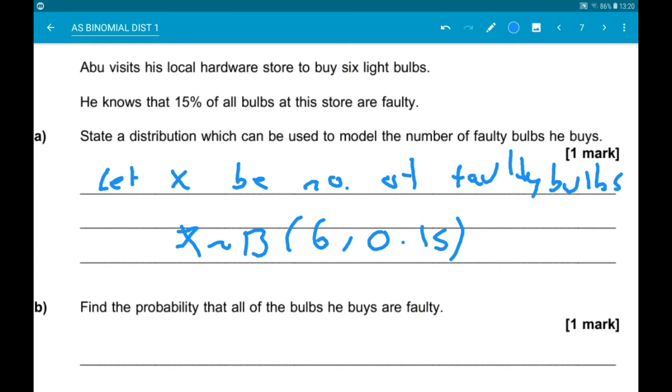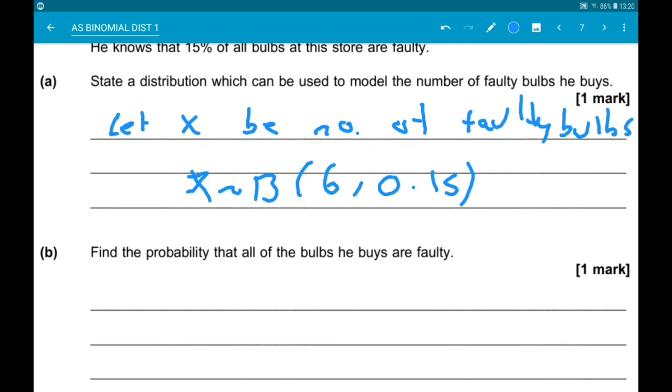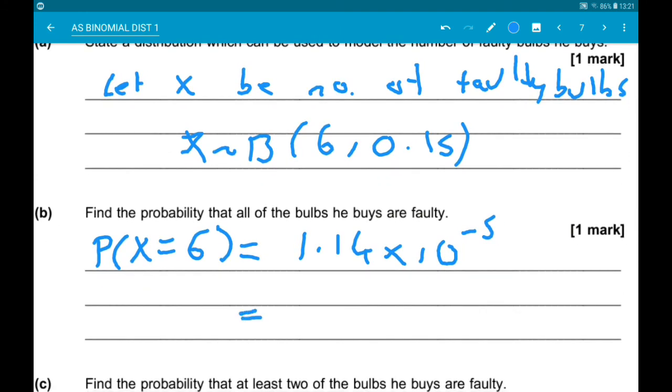Part B wants us to find the probability that all the bulbs he buys are faulty. So for that, we are finding the probability x equals 6. Now to three sig figs, you should get 1.14 times 10 to the minus 5, which is 0.0000114.